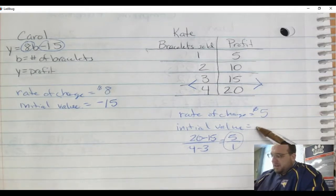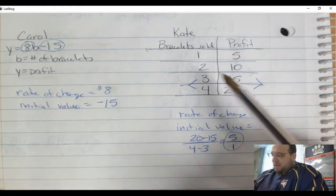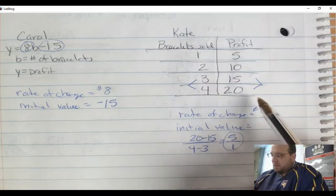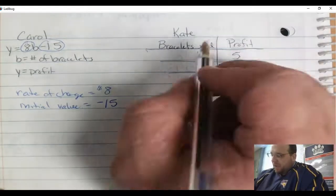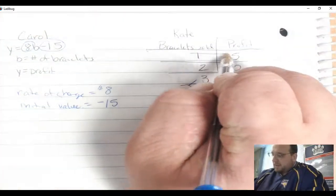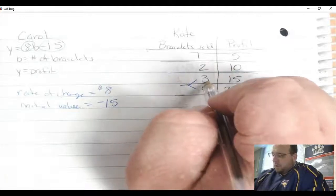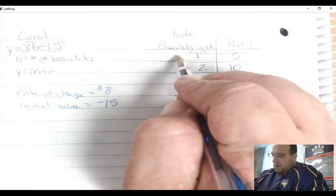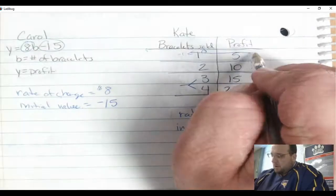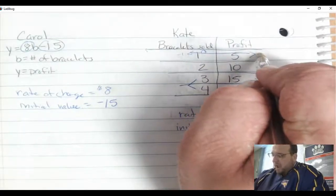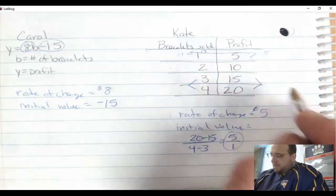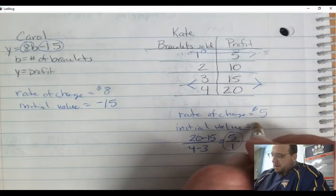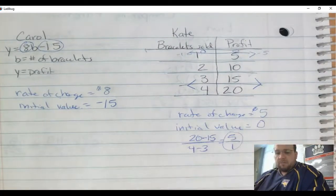So now I'm going to find the initial value. For initial value, I would look for where x is 0, and I notice on this one there is no x equals 0. So what I would have to do is create one where x is 0. I have to count backwards 4, 3, 2, 1 - I have to put a 0 here. So this would subtract 1. Anytime I subtract 1 over here, I have to subtract 5. So when I take 5 minus 5, this gives me my profit of 0. So this lets me know that her initial value was 0.